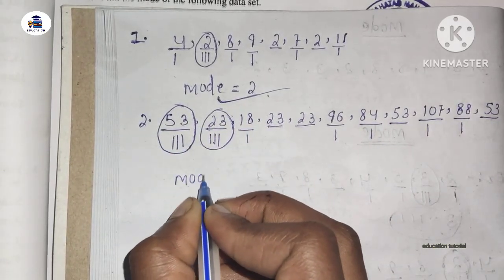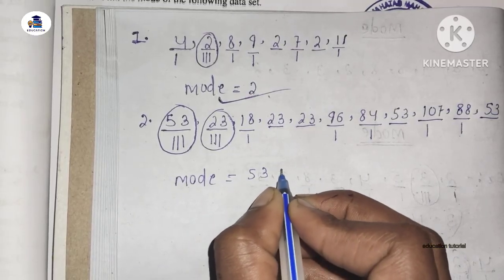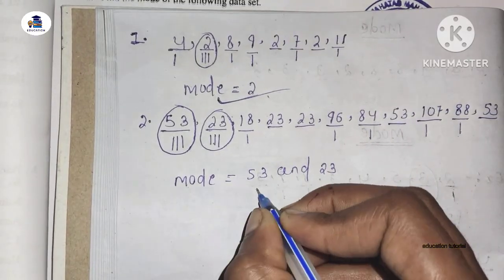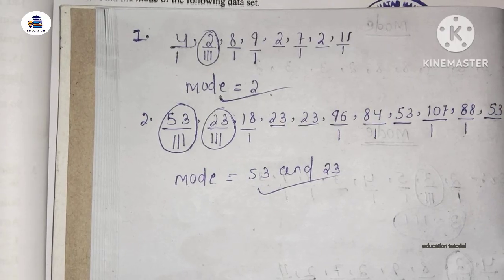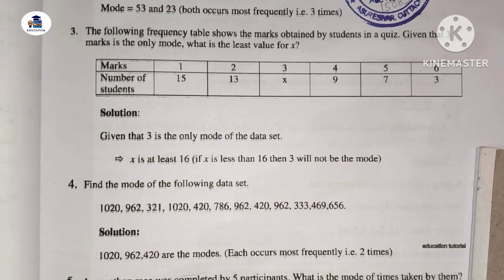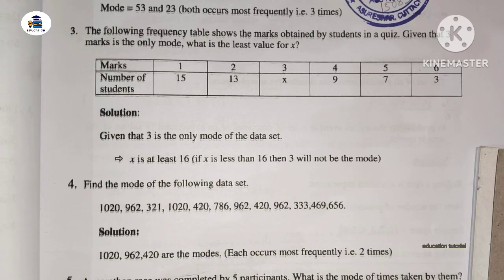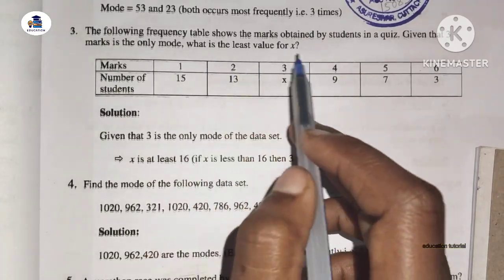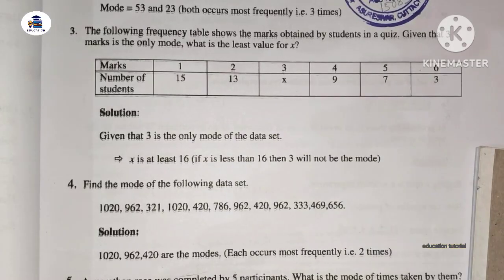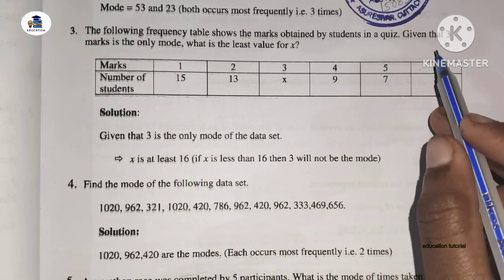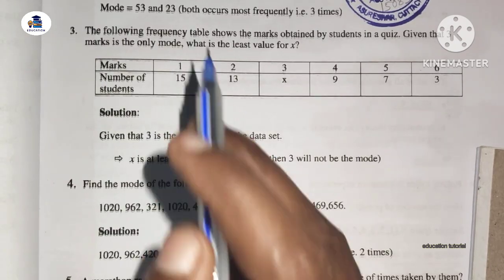The next question involves a table showing marks and the number of students. We need to find the mode from this frequency table.